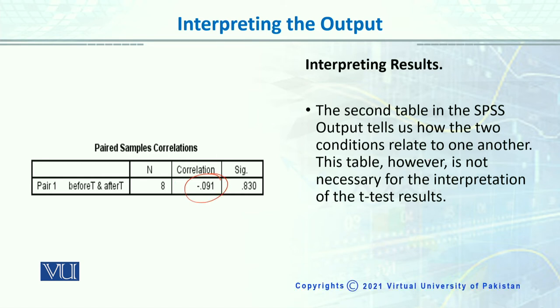It tells us how the two conditions relate to one another. This table, however, is not necessary for interpretation of the T-Test and we do not report it in the final results.